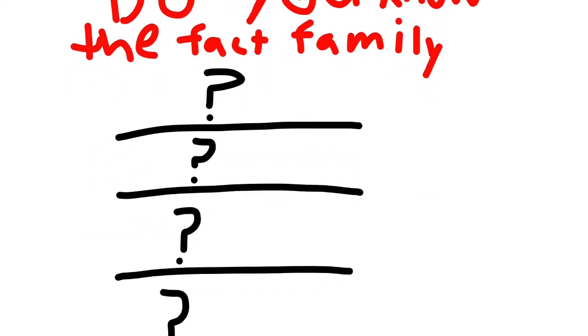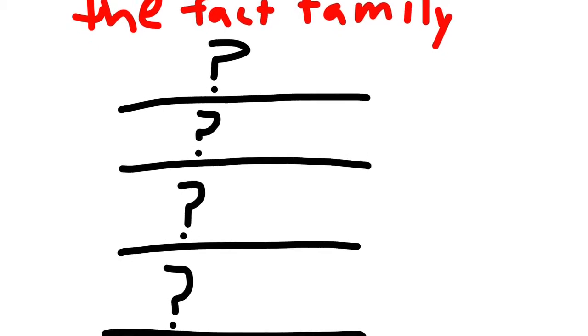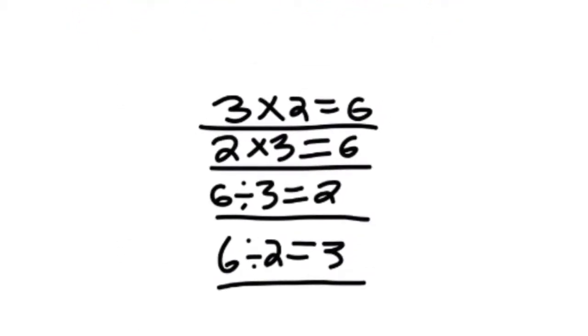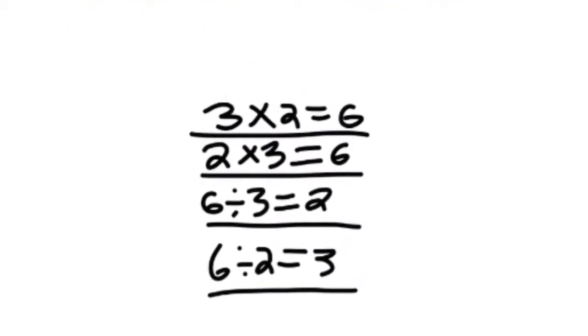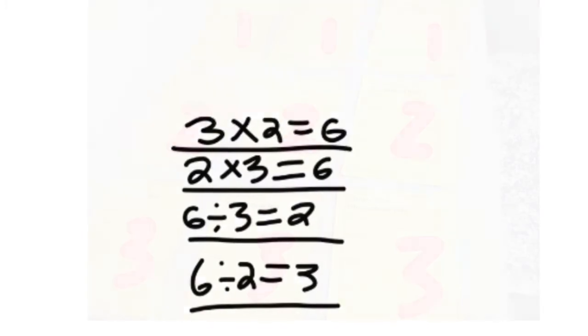Do you know the fact family? Three times two equals six. Two times three equals six. Six divided by three equals two. Six divided by two equals three.